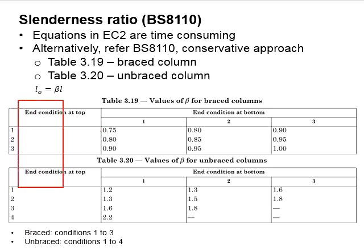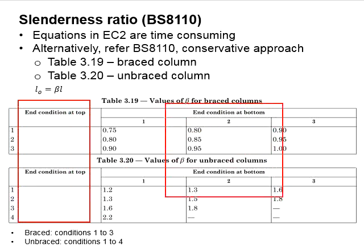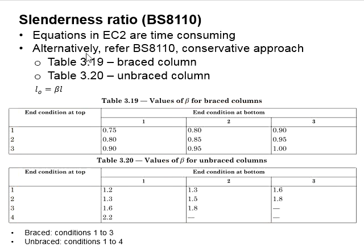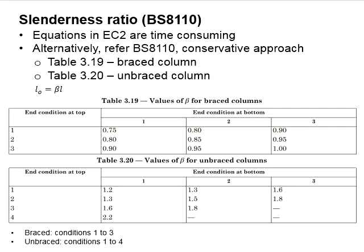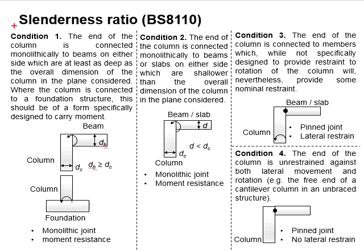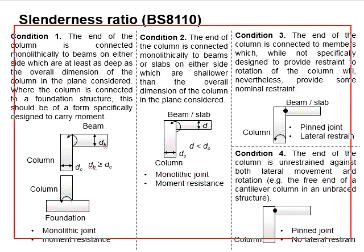This column represents the conditions at top while these columns represent the conditions at bottom. The numbers within here are meant for beta. The beta is a ratio that to be multiplied with the height of the column. This slide outlines the definition of condition 1 to condition 4.